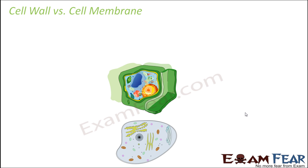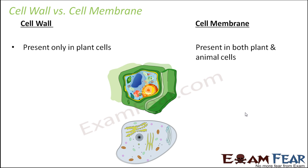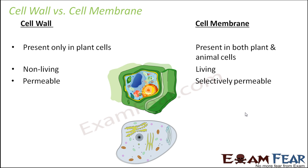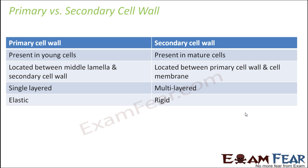Now let us have a quick comparison between cell wall and cell membrane. Cell wall is present only in plant cells, whereas cell membrane is present in both plant and animal cells. Cell wall is non-living, whereas cell membrane is living. Cell wall is permeable — it allows all particles to pass through — whereas cell membrane is selectively permeable, allowing only selected particles. Cell wall is hard and rigid, whereas cell membrane is thin, delicate, and flexible.